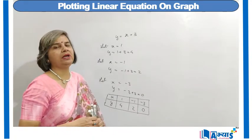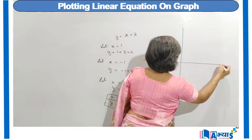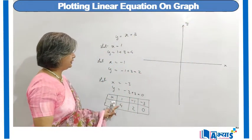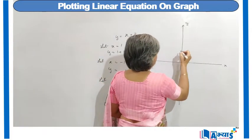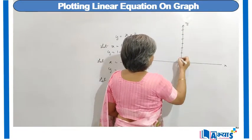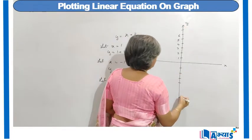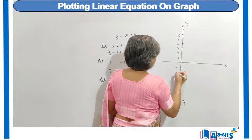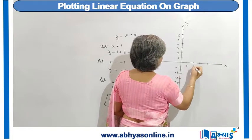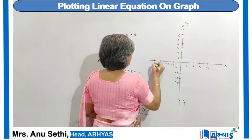Now we will try to plot these points on a graph. Let us take a graph — this is the x-axis and this is the y-axis. As the maximum value on y is 4, we mark the positive y-axis: 1, 2, 3, 4, 5, 6, and the negative side: minus 1, minus 2, minus 3, minus 4. Similarly for x, we mark 1, 2, 3, 4 on the positive side and minus 1, minus 2, minus 3, minus 4 on the negative side.